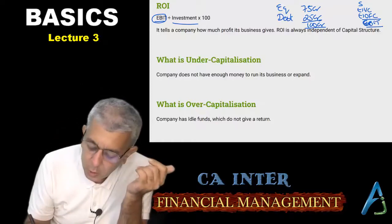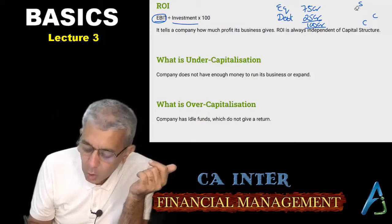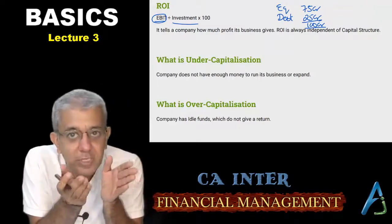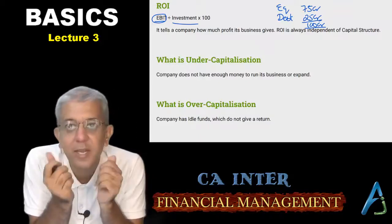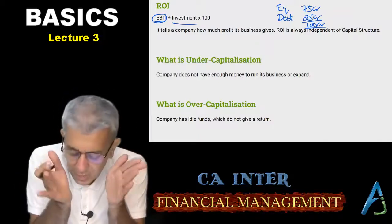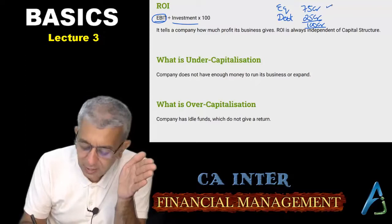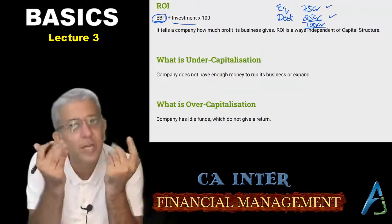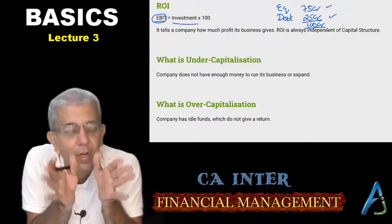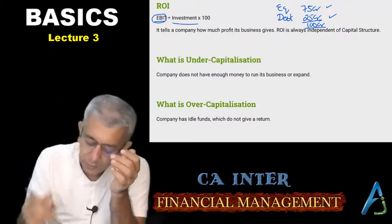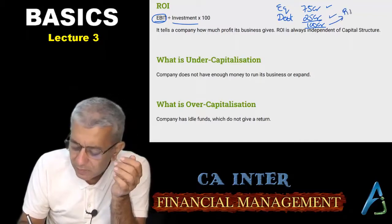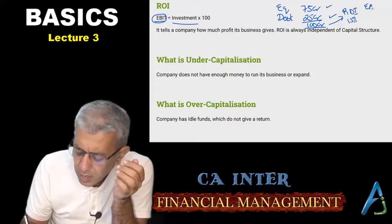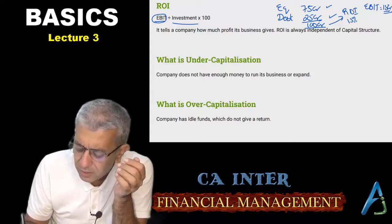Your EBIT is always independent of your capital structure. Suppose for starting this business I required 100 crores. I thought I will be taking 75 crores in the form of equity shares and the rest 25 crores I will issue as debt. So I had 100 crores of capital. On this capital, I was thinking that I will be earning an ROI of 15%, so my EBIT in this case will be 15 crores.